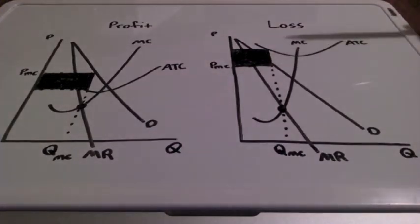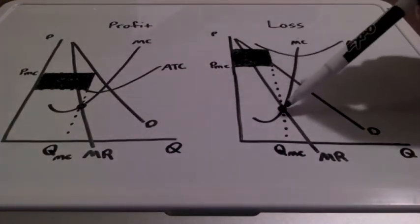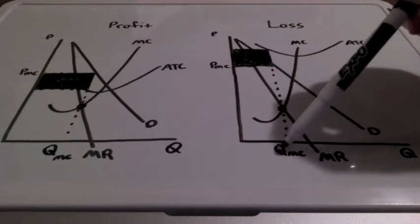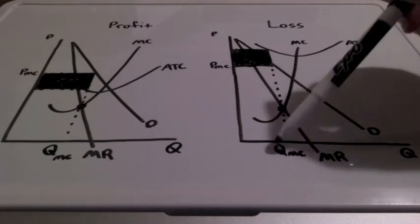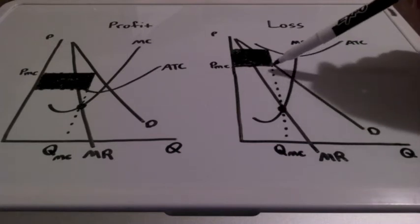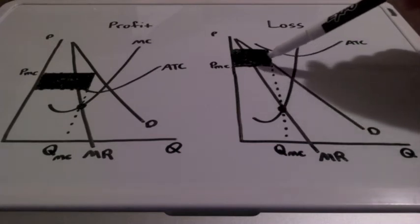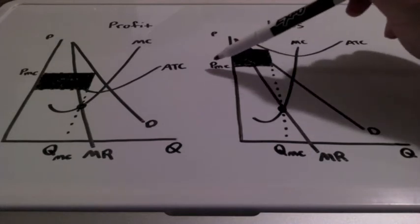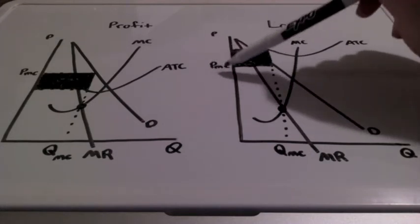Now, for the loss, same concept. We find where marginal revenue equals marginal cost. We have our profit maximizing quantity, QMC. We bring this up to the demand curve. Remember, our demand curve equals the price for the firm. This is labeled PMC.